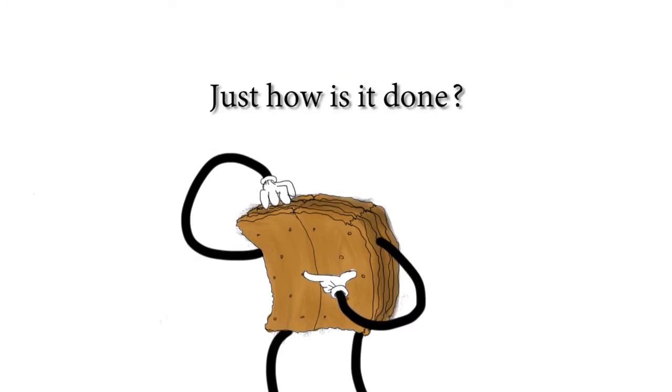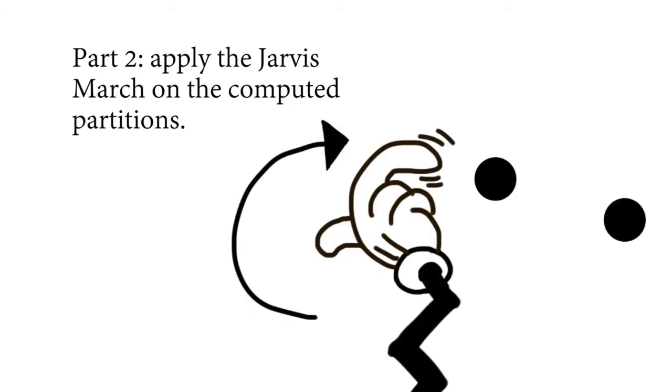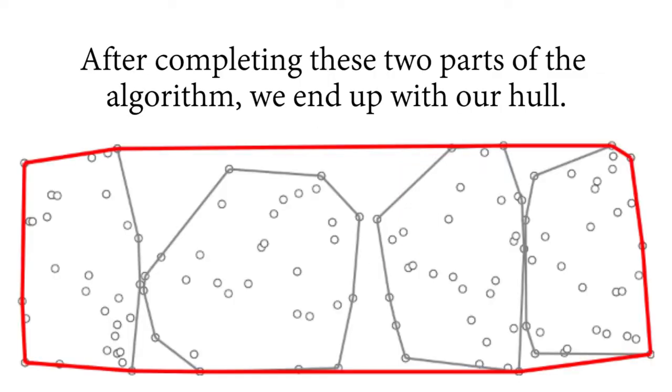So how is it done? First, split the set of points into different partitions and apply the Graham Scan onto each partition. Then apply the Jarvis method on the computed partitions. After completing these two parts of the algorithm, we will eventually end up with our hull.